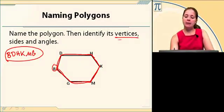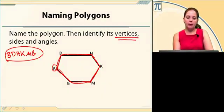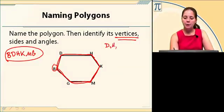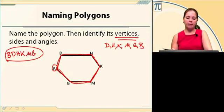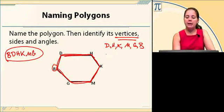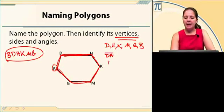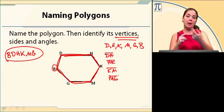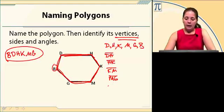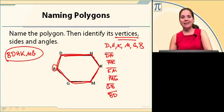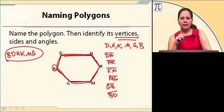To identify its vertices, the vertices are just the points that we just named: D, H, K, M, G, and B. Those are the vertices, they can be named in any order. The sides, those are segments. So I have DH, HK, KM, MG, and with a segment it could be MG or GM, GB, and BD. I have those six segments.